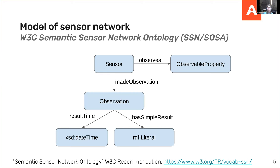For modeling the sensor network itself, we can use the W3C Semantic Sensor Network ontology, which captures what sensor made an observation, at what time, what was the result, and critically, what kind of sensor it is — for example, whether it's observing temperature or looking for a certain type of object in a surveillance video.